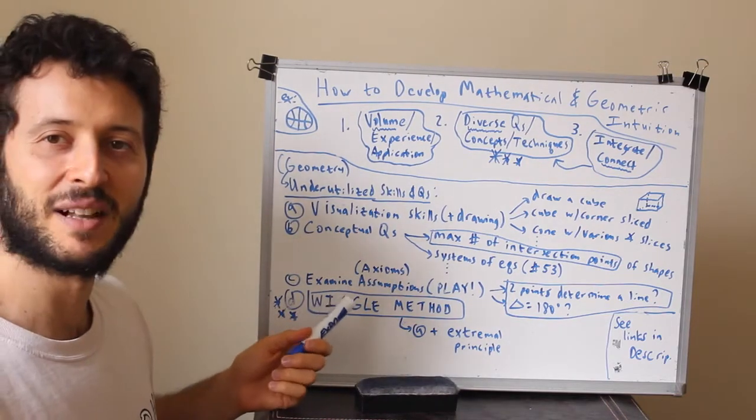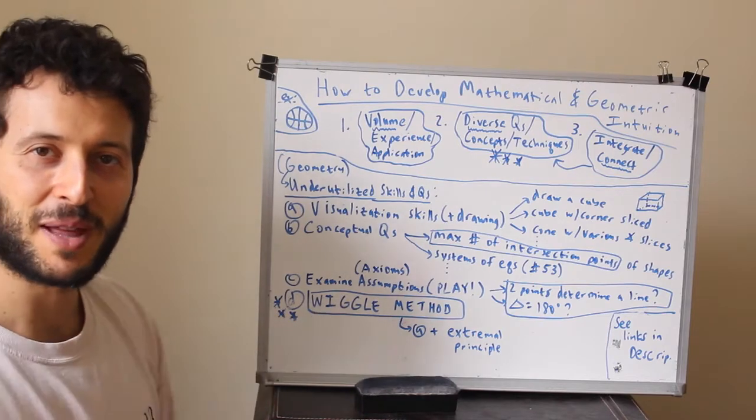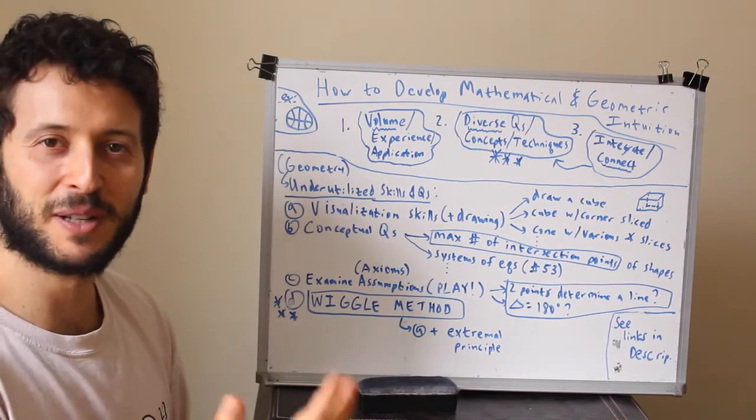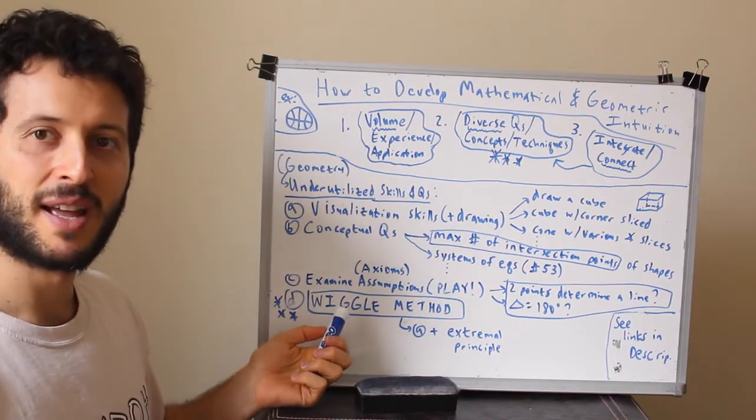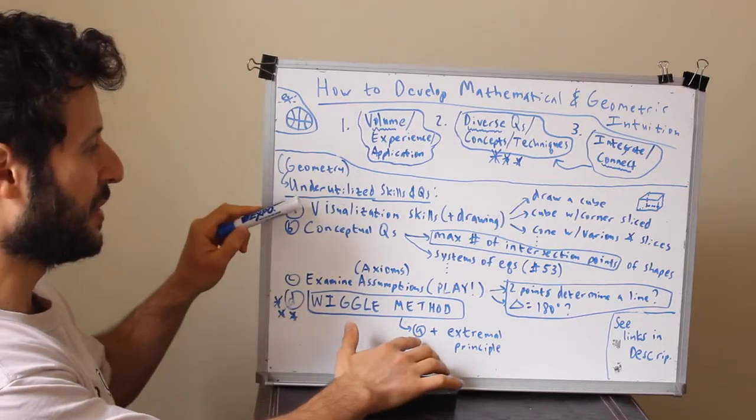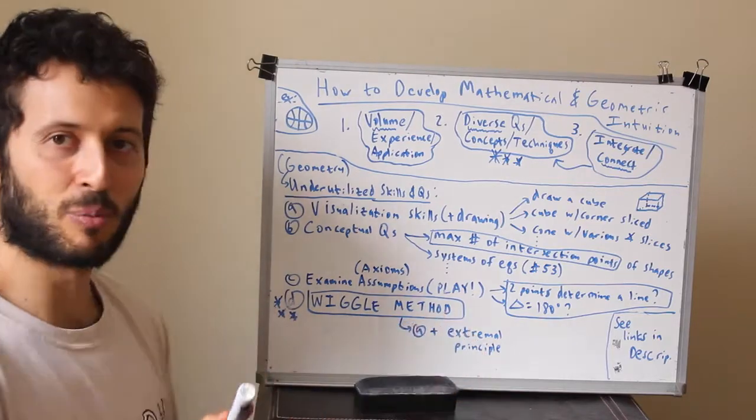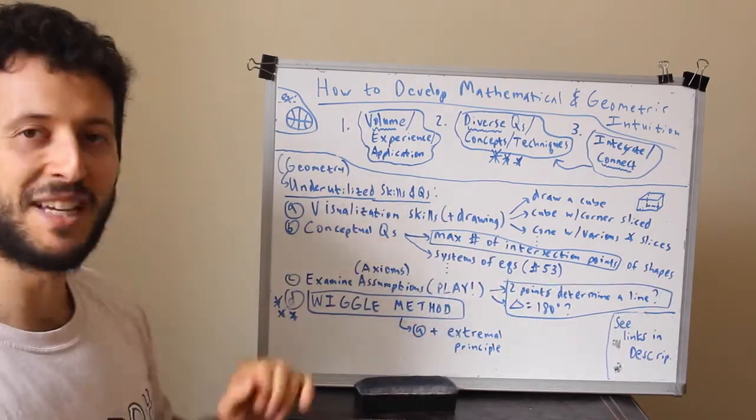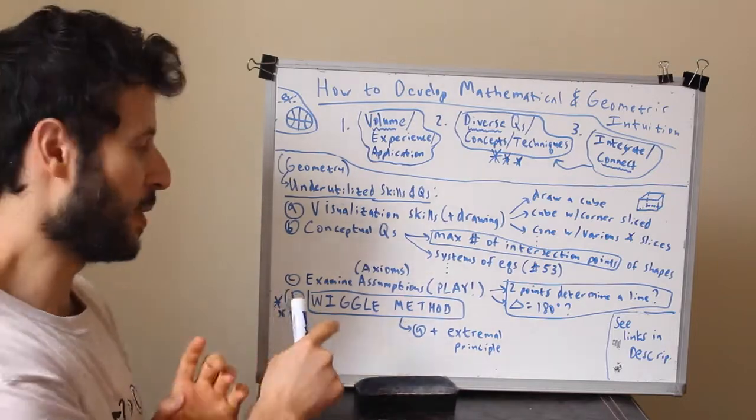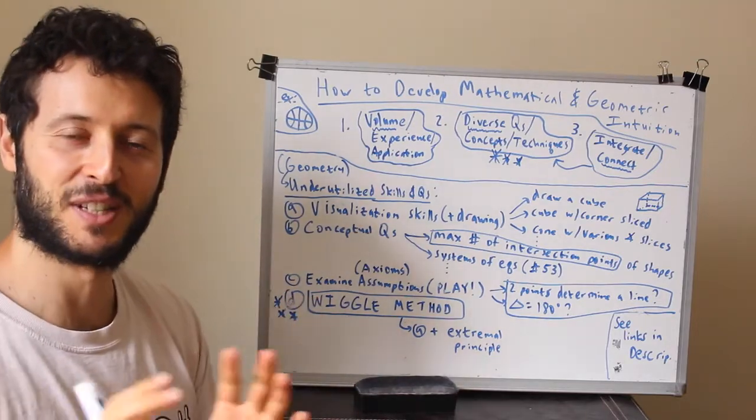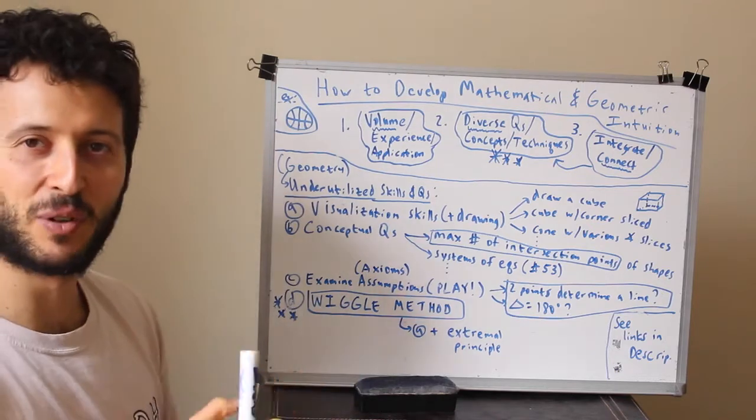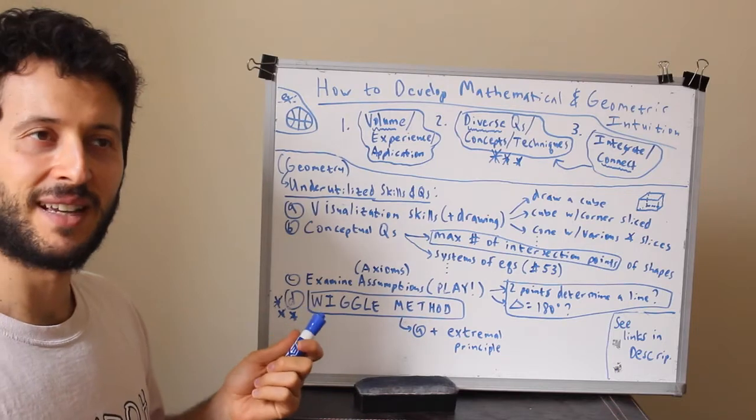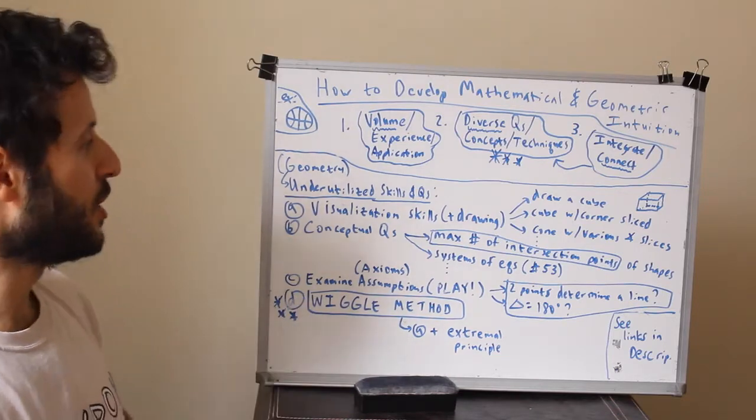I'm not going to go into detail about the wiggle method. The wiggle method is one of my favorite things, something I created for myself during my school years. In a nutshell it's going to involve combining visualization with the extremal principle - taking things to extremes and seeing what happens, i.e. wiggling things around. I'm just going to leave you guys in suspense, but stay tuned - in several videos I'll definitely do a video on the wiggle method.